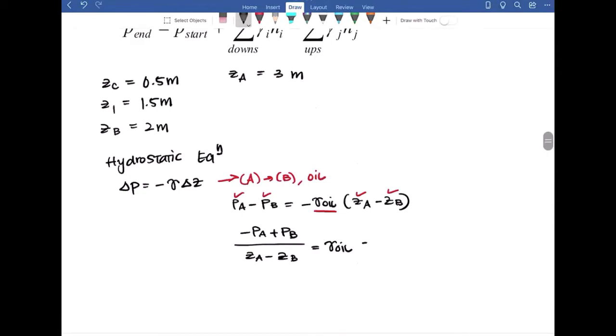So PA is negative 50 kilopascals. PB is 58.53 kilopascals. ZA we already calculated in the previous step, which is 3 meters minus ZB, which is 2 meters. Well that's some pretty simple math.